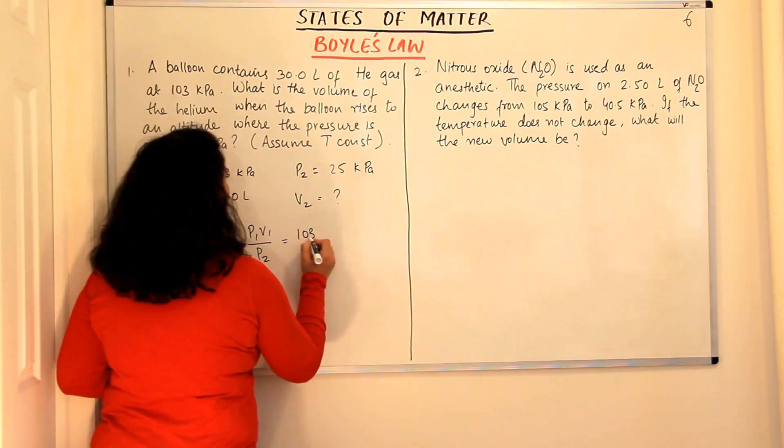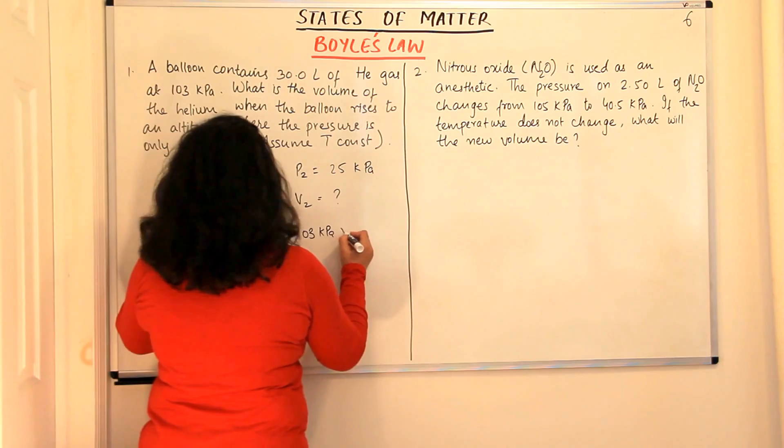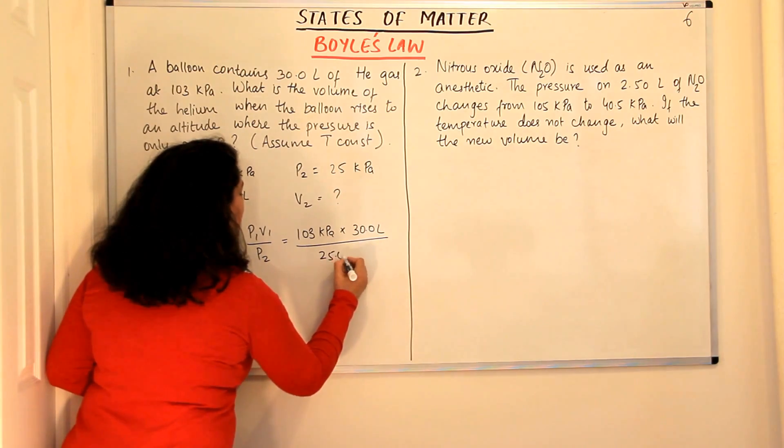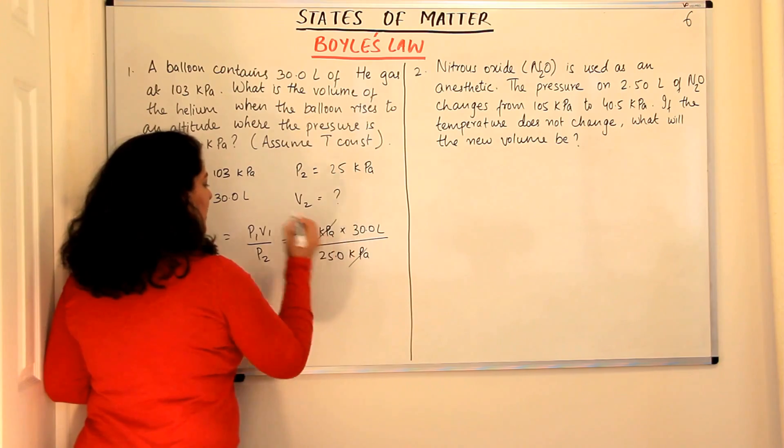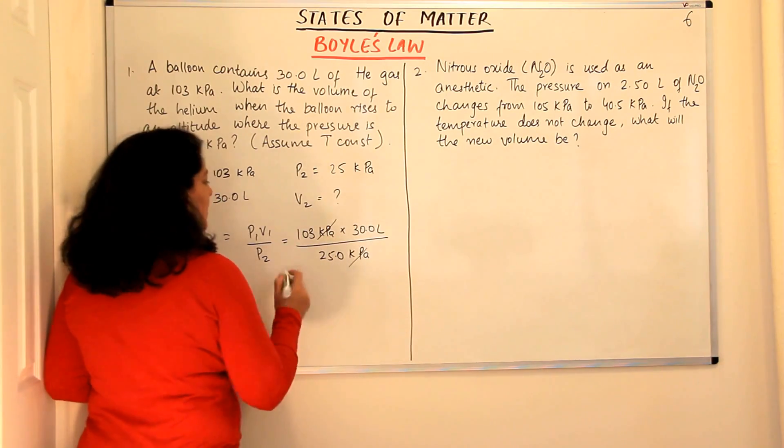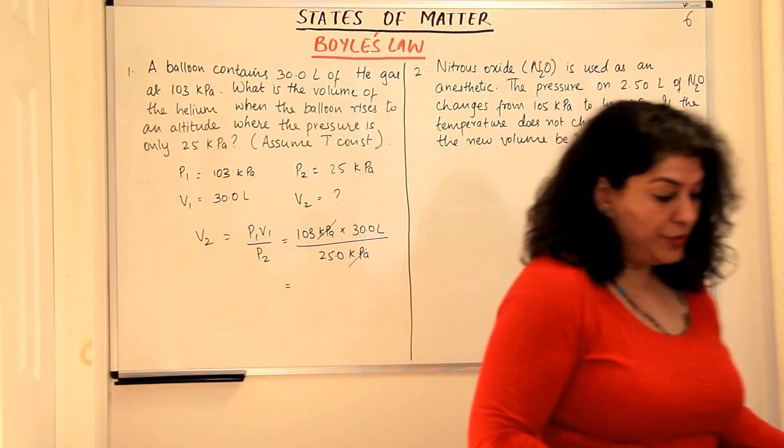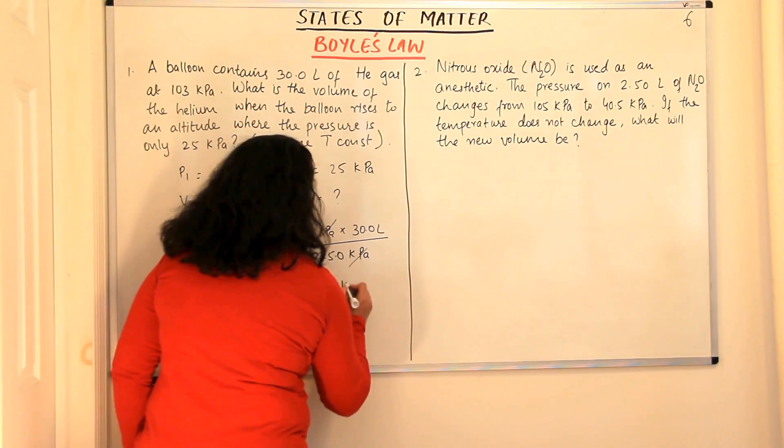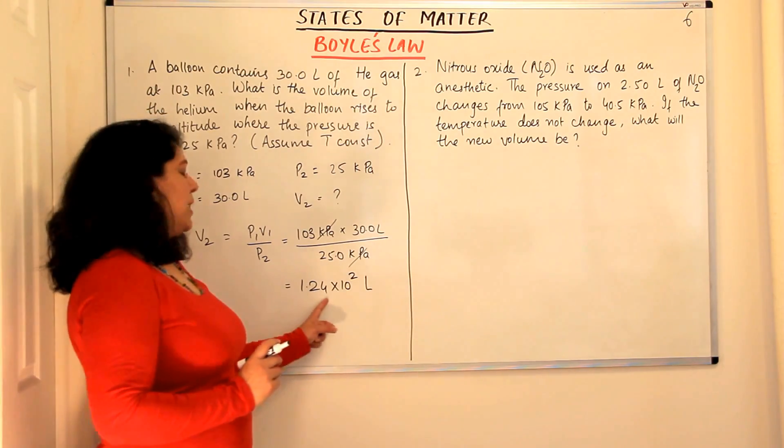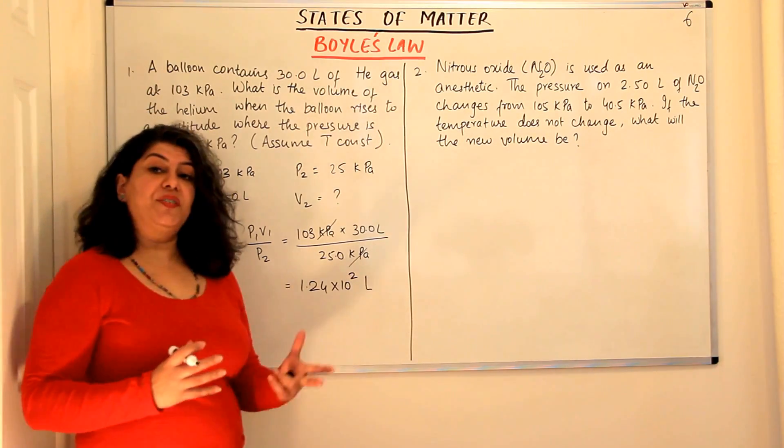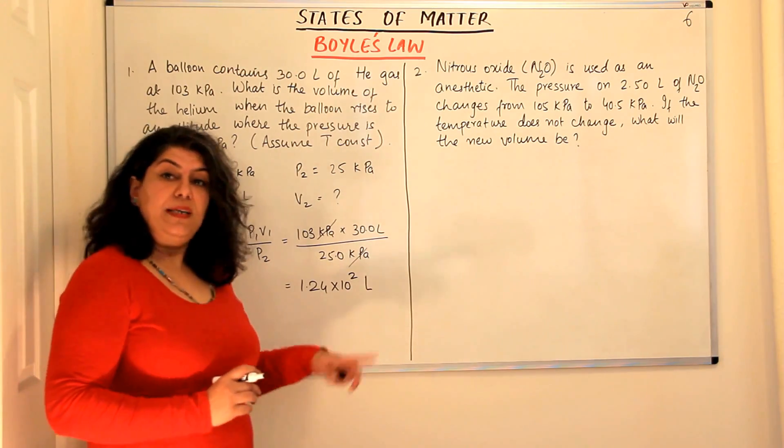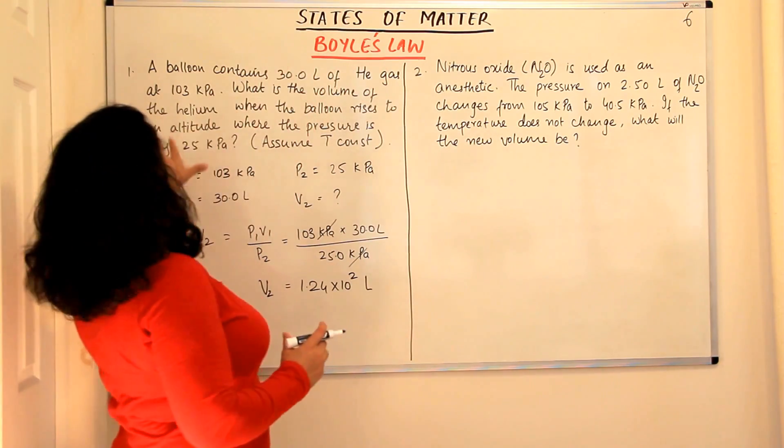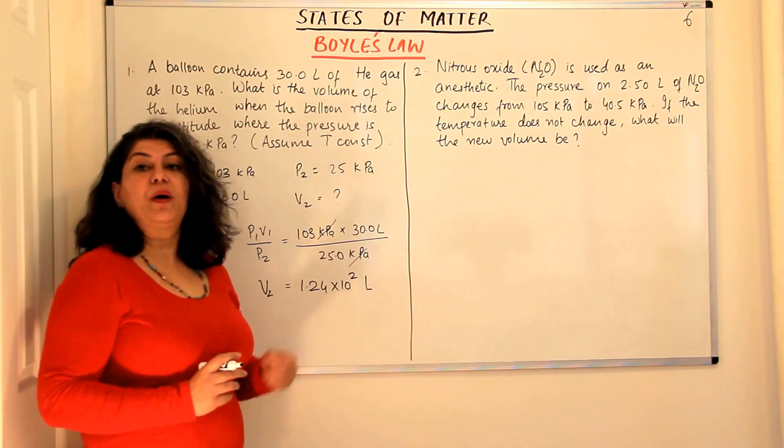P1 is 103 kilopascals into V1 is 30.0 litres and P2 is 25.0 kilopascals. The kilopascal and kilopascal are cancelled. You will get your answer in litres. If you plug in these values into the calculator, the answer you will get would be 1.24 into 10 to the power 2 litres. That is, you will get 124 litres and you write your answer in scientific notation. So the volume of the balloon at a height where the pressure is 25 kilopascals would be 1.24 into 10 to the power 2 litres.